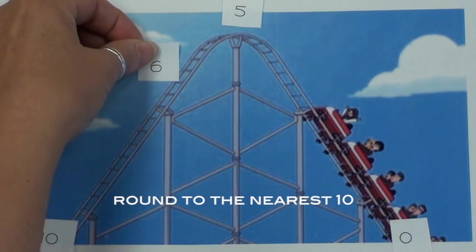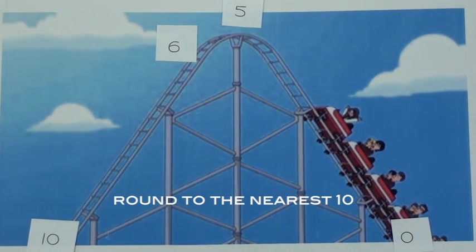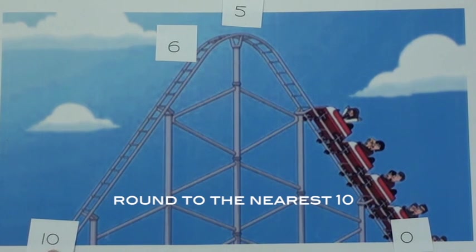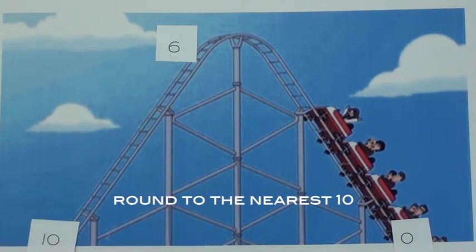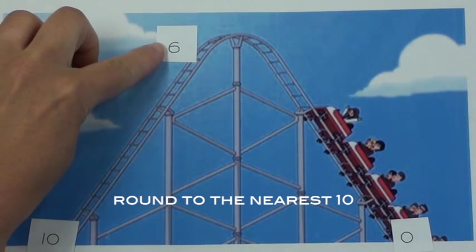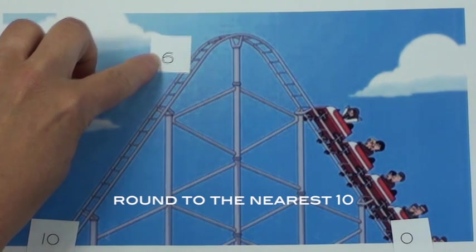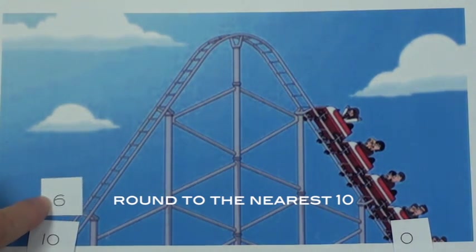Let's try a few. What whole number would you round 6 to? Imagine the roller coaster with a 0 and 10 on either end. Remember that if a number is 0 to 4, we round down. If it is 5 to 10, we round up. Considering 6 is higher than 5, we round up to 10.